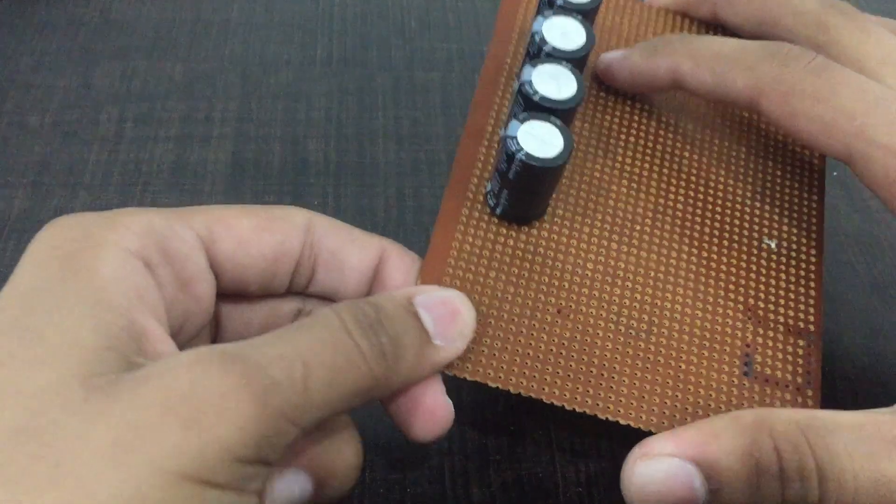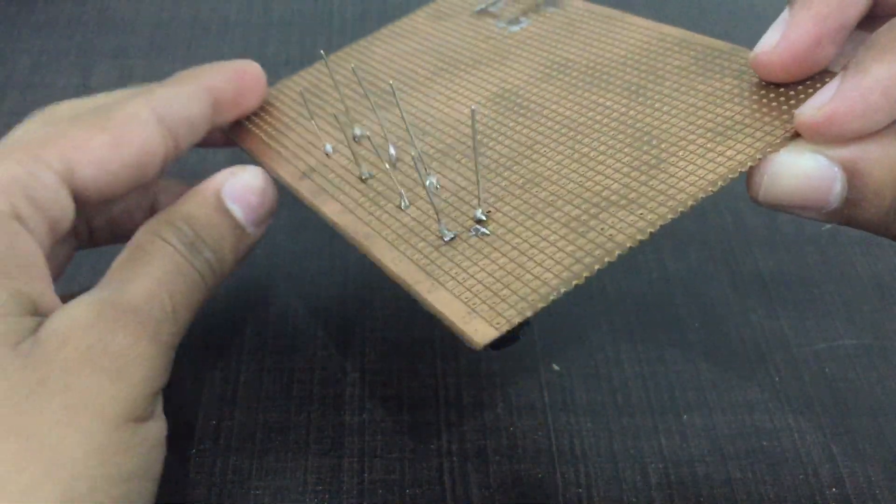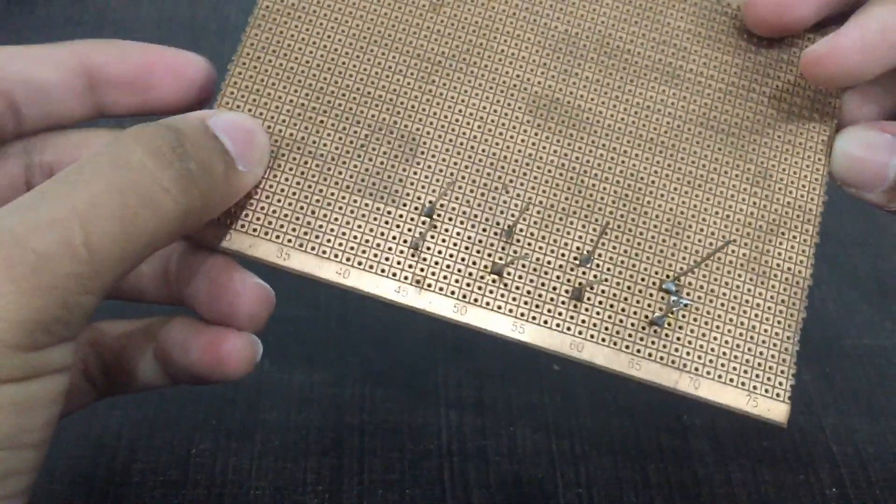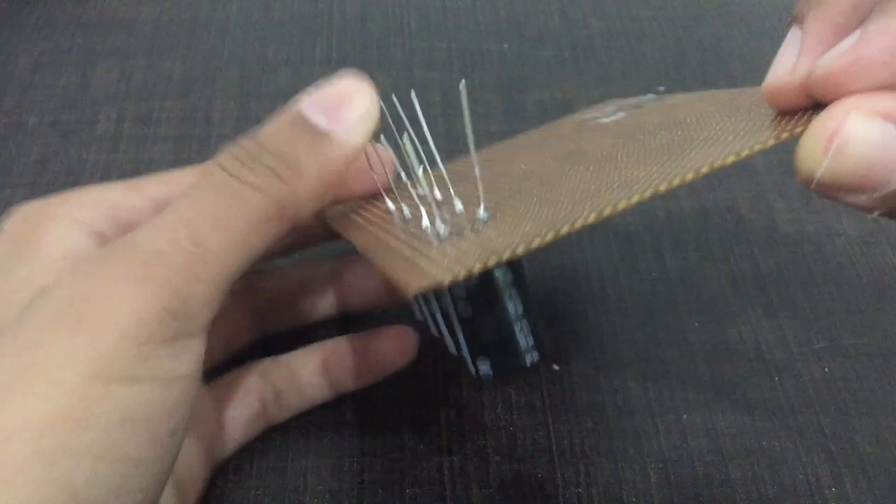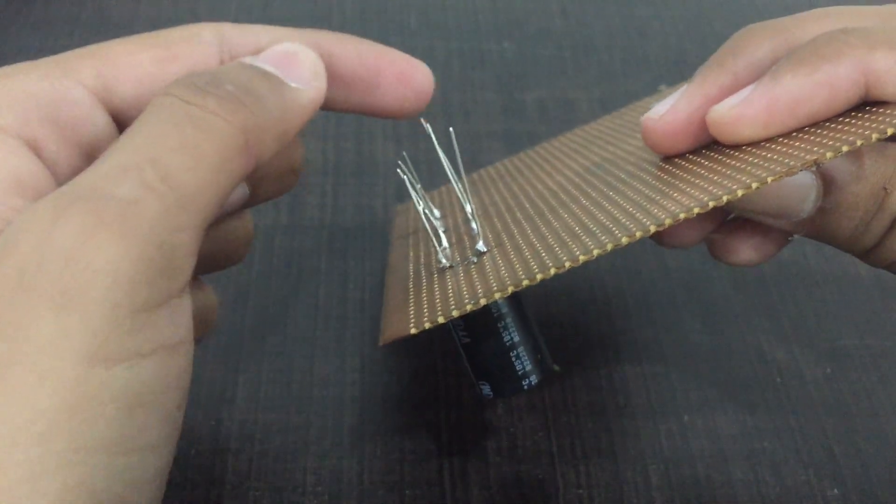This is how it looks after mounting the capacitors onto the perfboard. You may notice that all the negative wires are on one side and all the positive ones are on the other. That is because I will be connecting them in parallel.